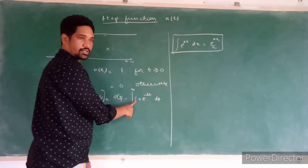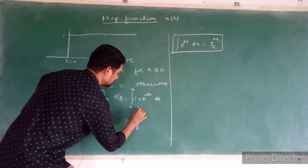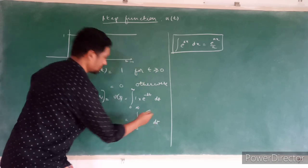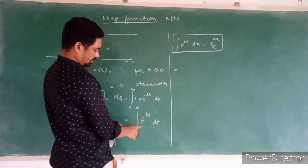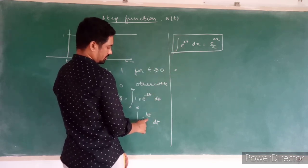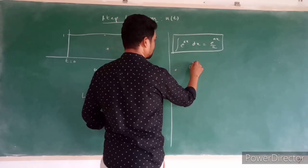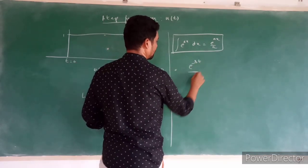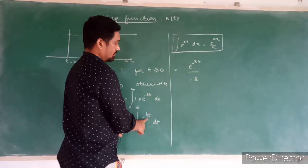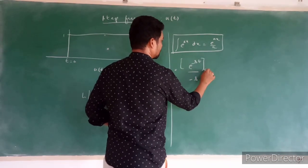We do not need to integrate this one. So this will be 0 to infinity, e raise to minus st dt. The continuation will be equal to the integration of this one, e power minus st with respect to t. So what we have is e raise to minus st upon minus s, which is the coefficient of t, and the limits are 0 to infinity.